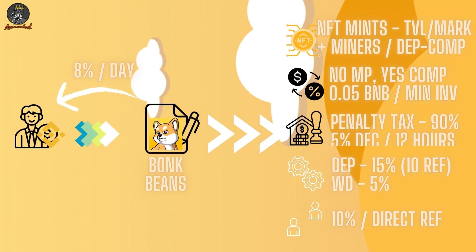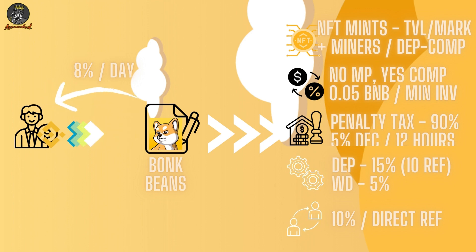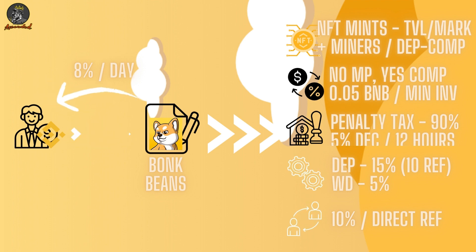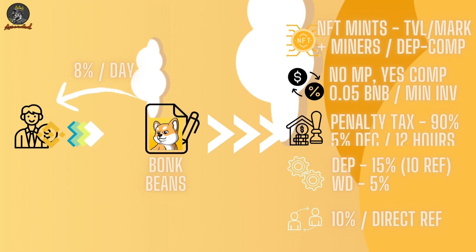It's not 8% on the BNB you invested — it's 8% on the underlying asset. With any degen dApp there are rules to follow. There is a 10% direct referral fee — every person that enters with your link directly, you get 10% from their stake. When you deposit there's a 15% tax: 5% is delegated to marketing/dev fee or back to the contract, and the 10% goes directly to your referral. Whenever you withdraw there's also a 5% tax, so it's essentially 5% in and 5% out.